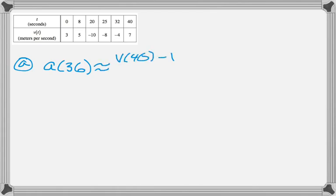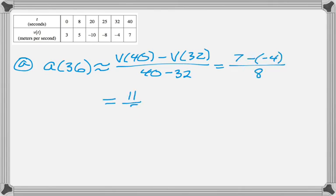We use a difference quotient, so V(40) minus V(32) over 40 minus 32. Now I switch to an actual equal sign, plug in some values, and I get 11 over 8.